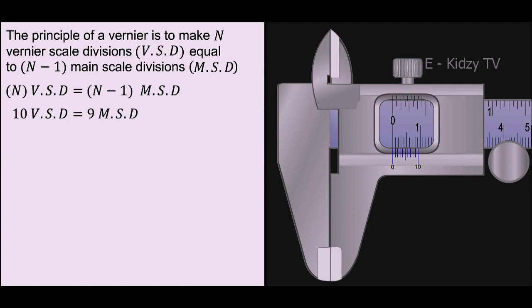Therefore, 1 VSD is equal to 9 divided by 10 MSD. Thus, the main scale is graduated in millimeters, whose 1 MSD is 1 millimeter.